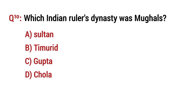Question number 10: Which Indian royal dynasty was Mughal? The right option is B: Timurid.